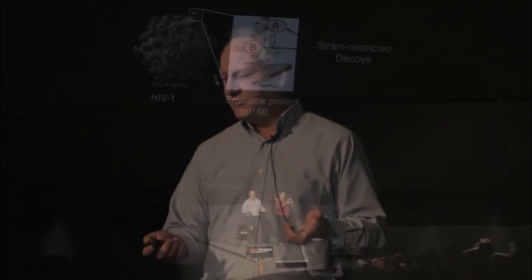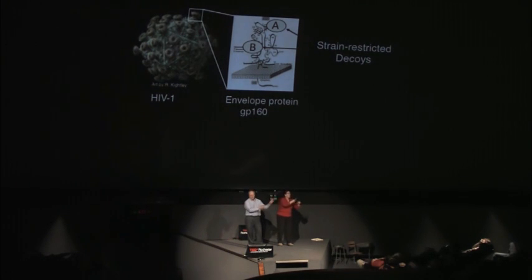Therefore, that is the primary target for our immune response for protection, at least so we think. The problem is, like the A's, B's, and C's alluded to earlier, we see dominant epitopes that are strain-restricted in these loops. Our antibodies or any immune response we make is only strain-restricted, and then the virus can evolve away from it, leaving us unprotected.